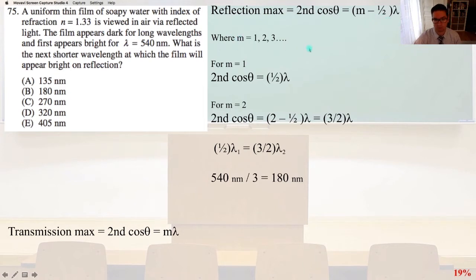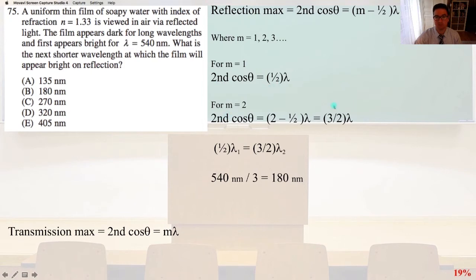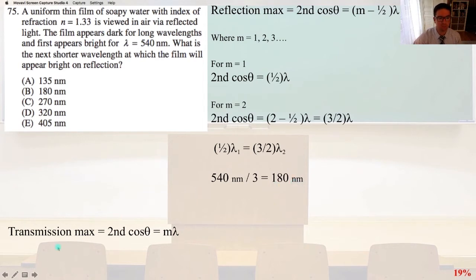For m equals 1, 2nd cosine theta equals one-half lambda. For m equals 2, 2nd cosine theta equals three-halves lambda. Since 2nd cosine theta is the same in both, we set one-half lambda₁ equal to three-halves lambda₂. We know lambda₁ is 540 nanometers, so with a little algebra the second wavelength — the next shorter wavelength at which the film will be bright — is 180 nanometers. Answer B.